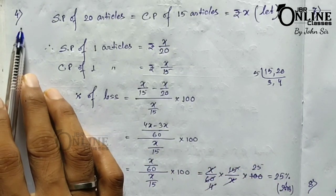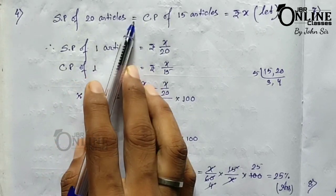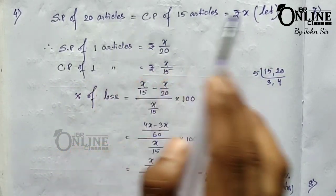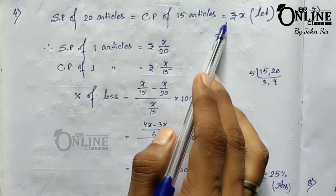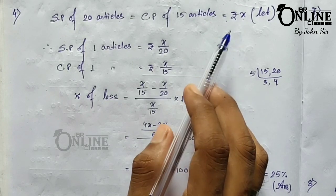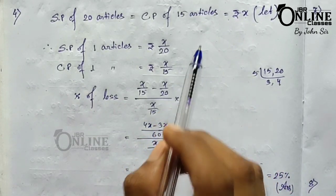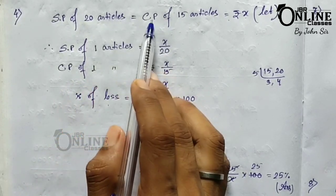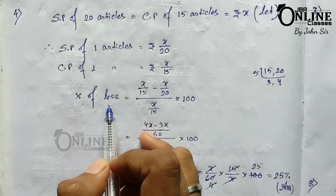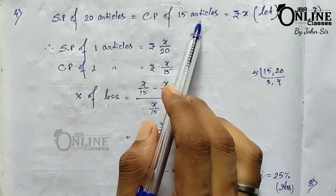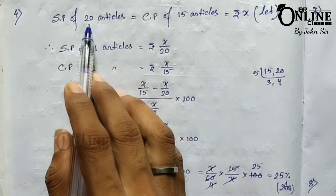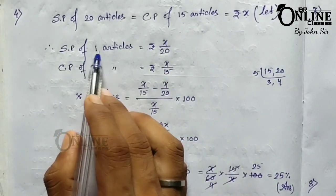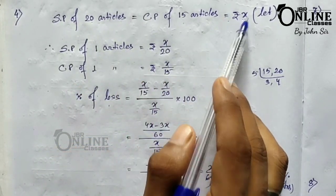In problem number four, the selling price of 20 articles equals the cost price of 15 articles. Let SP of 20 articles equal x, which also equals the CP of 15 articles. To find the loss percentage, we first need the SP and CP of one article. SP of one article equals x/20, and CP of one article equals x/15, both by the unitary method.